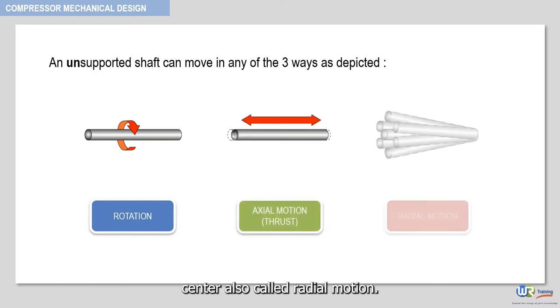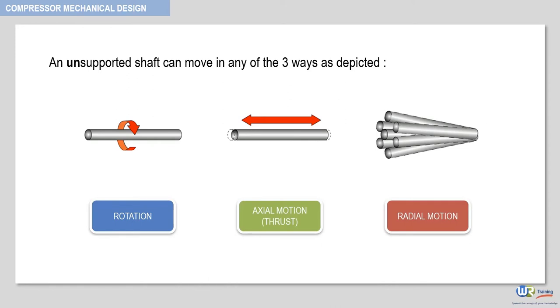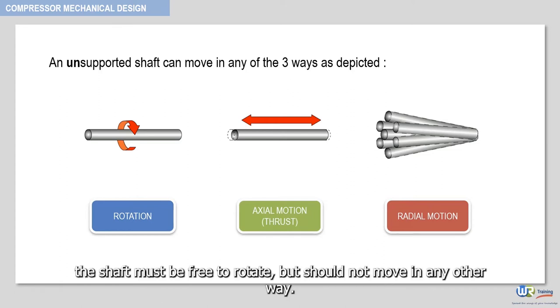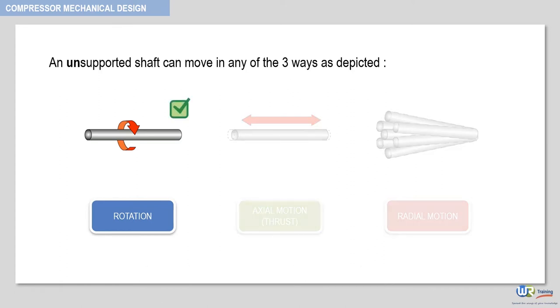In the centrifugal compressor, or in any other type of rotating equipment, the shaft must be free to rotate but should not move in any other way. There are forces in the centrifugal compressor that tend to make axial and radial motions of the shaft.